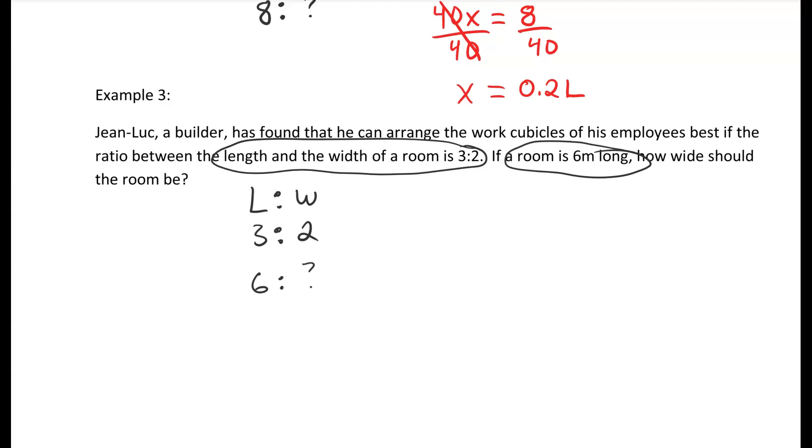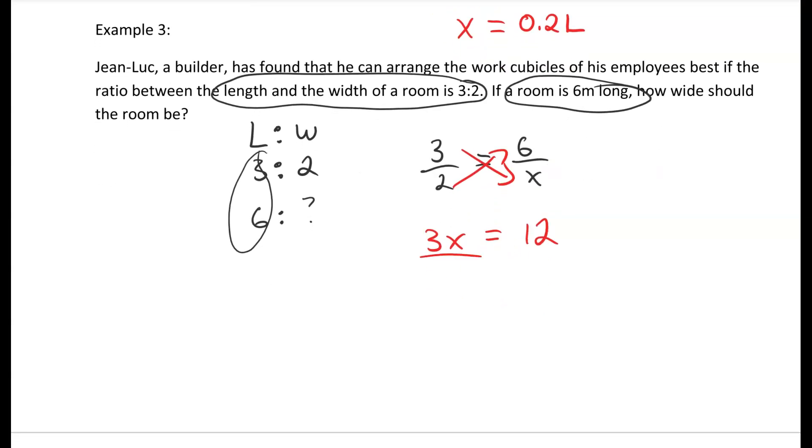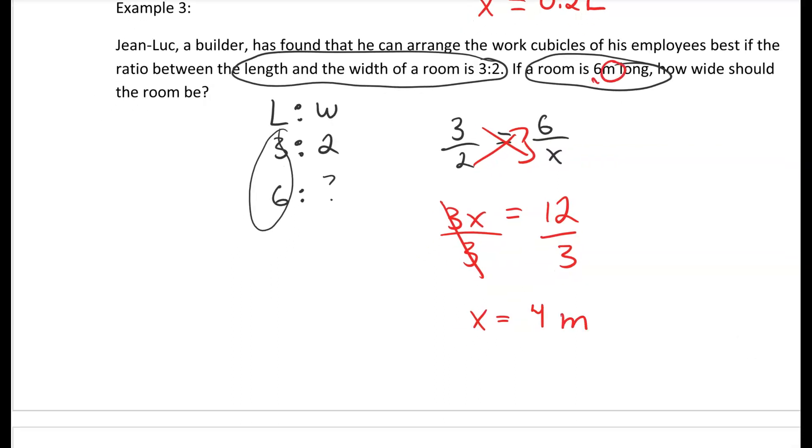We turn our ratio into a fraction: 3 over 2 equals 6 over x. It's important that if your length is on this side, they're both ending up on the top. Do not flip your fractions. We cross multiply: 3 multiplied by x, which is 3x, equals 2 multiplied by 6, which is 12. We isolate x by dividing by 3 on both sides, which gives us x equals 12 divided by 3, which is 4. Pay attention to what our unit is—it's meters. So it is 4 meters wide.